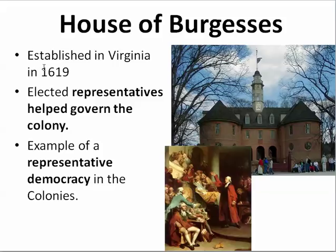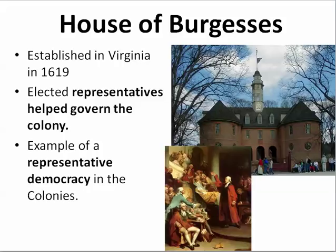So the House of Burgesses was established in Virginia — we usually call it the Virginia House of Burgesses — in 1619. It's basically a legislature, and a legislature makes the law. Just as the United States Congress is our national legislature, and the Georgia General Assembly is our state legislature, the Virginia House of Burgesses is the first example of a representative democracy within the American colonies. That's one of the things you need to know for the OCT.